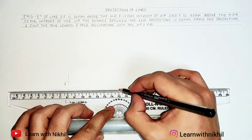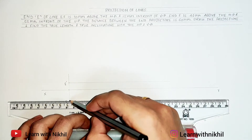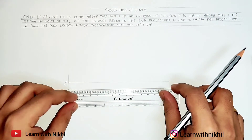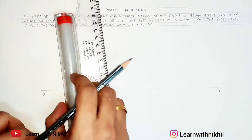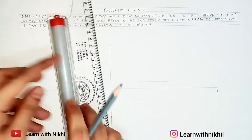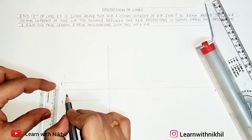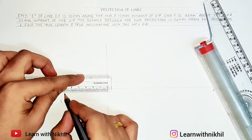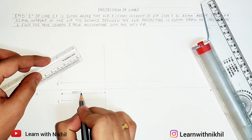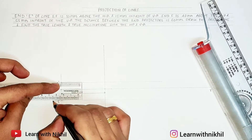Now we will draw parallel lines through points E dash and E. Next I will mark the end projector distance, which is given as 60 mm. So here I will mark a point 60 mm — this will be the distance of the end projector — and draw a line through it. I will denote this as DBEP, that is the distance between end projectors, which is 60 mm. I will mark the dimension here also. This height is 10 mm and this is 15 mm.